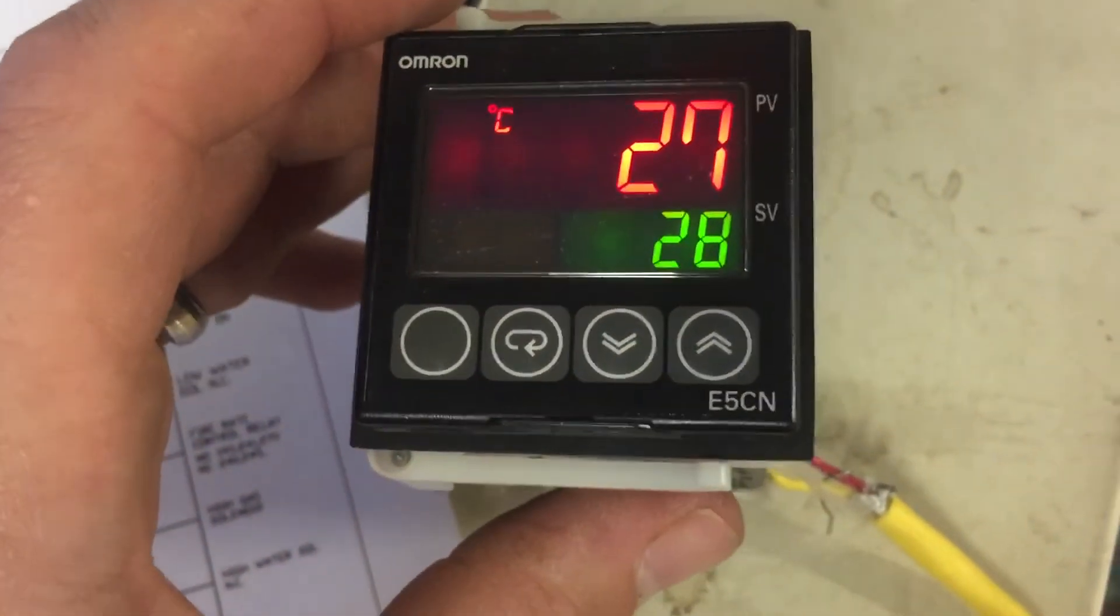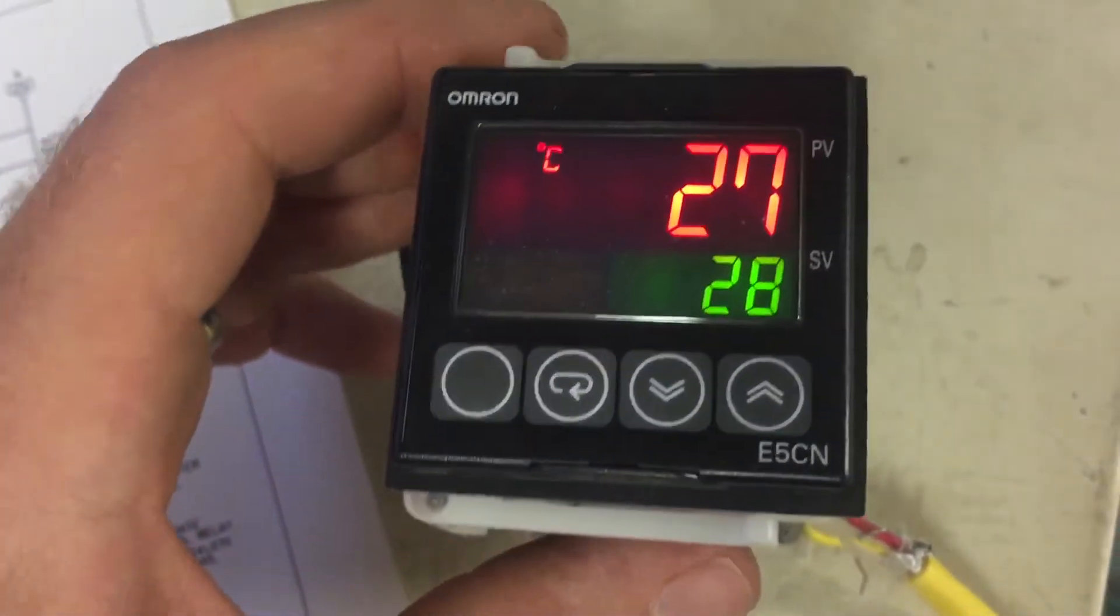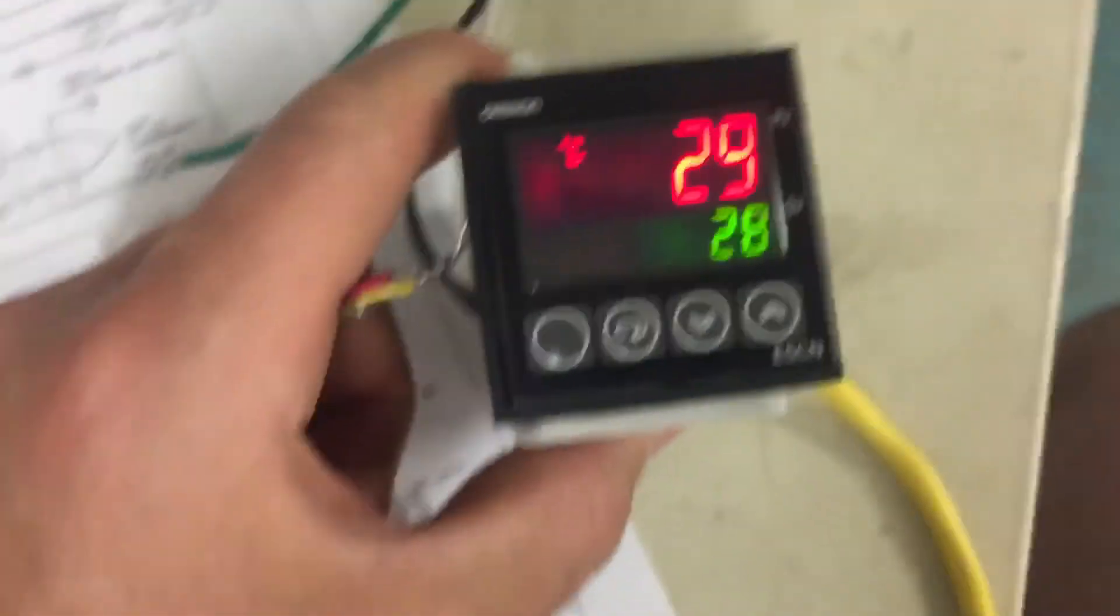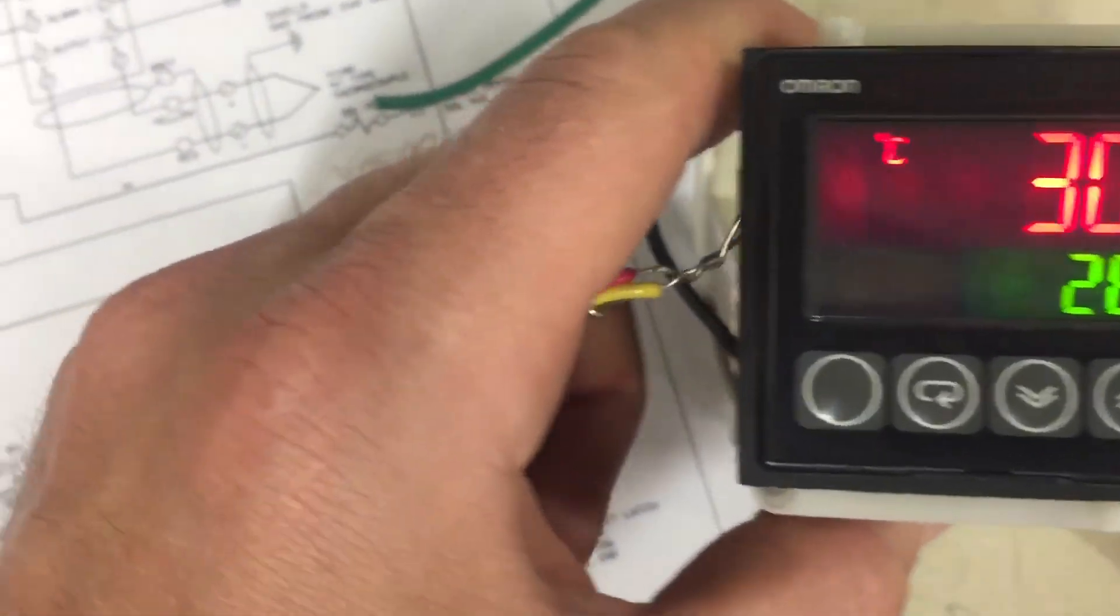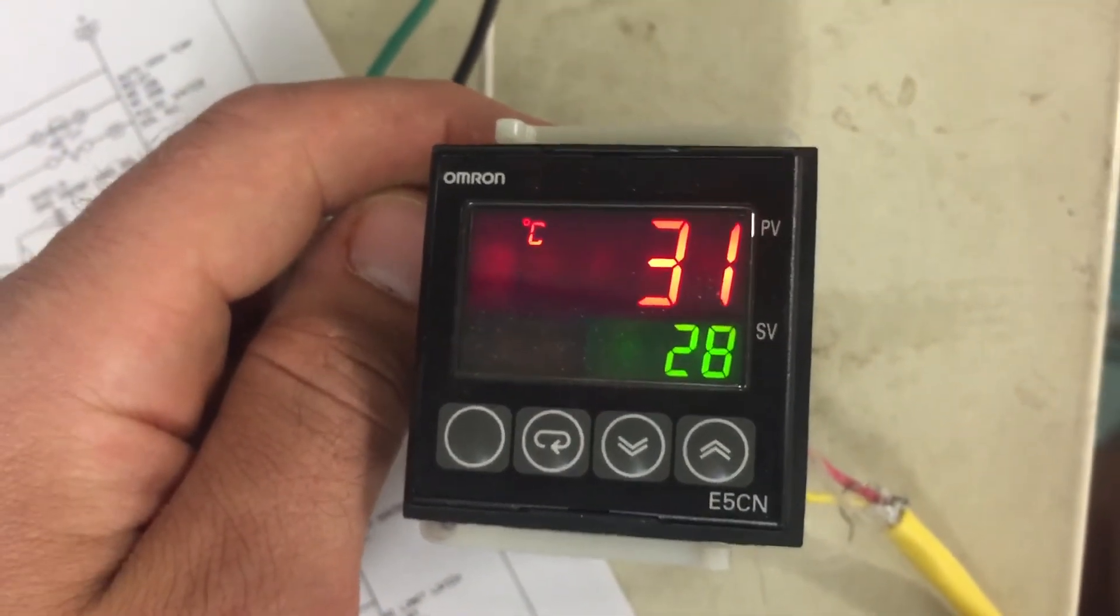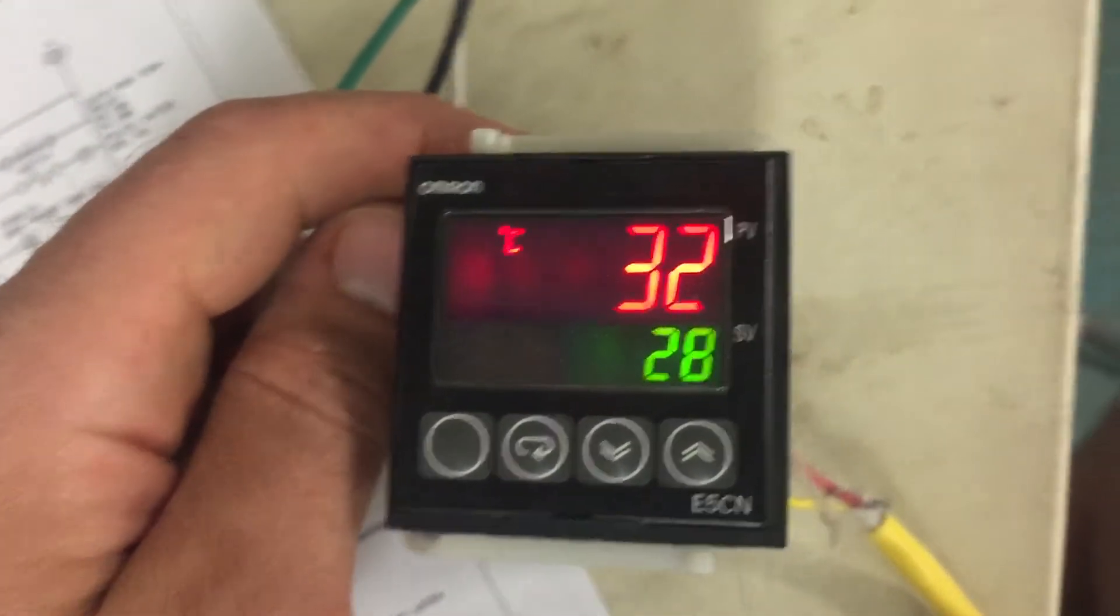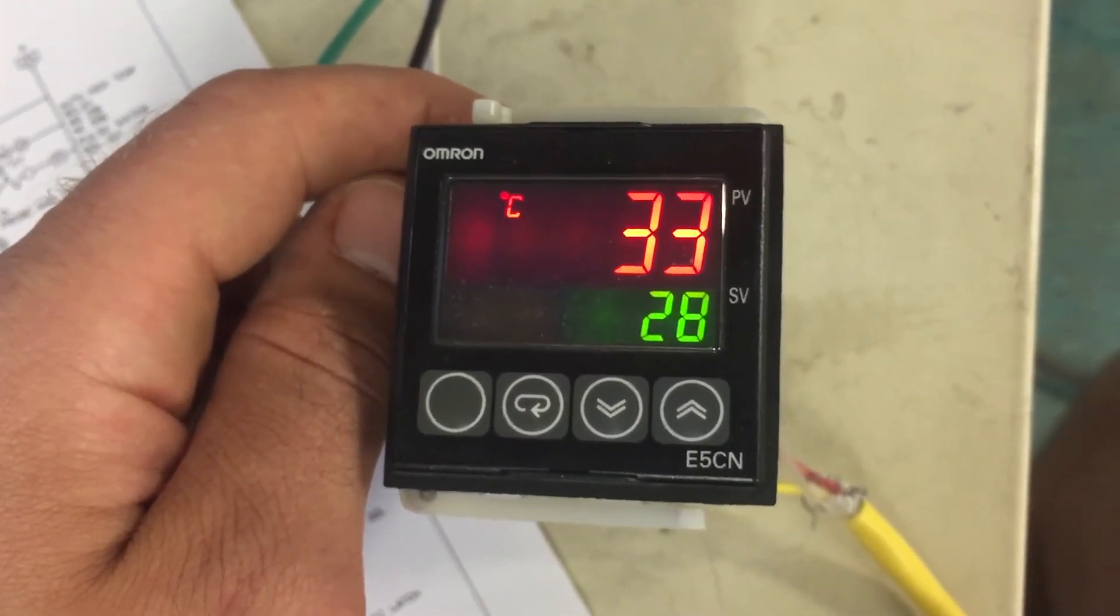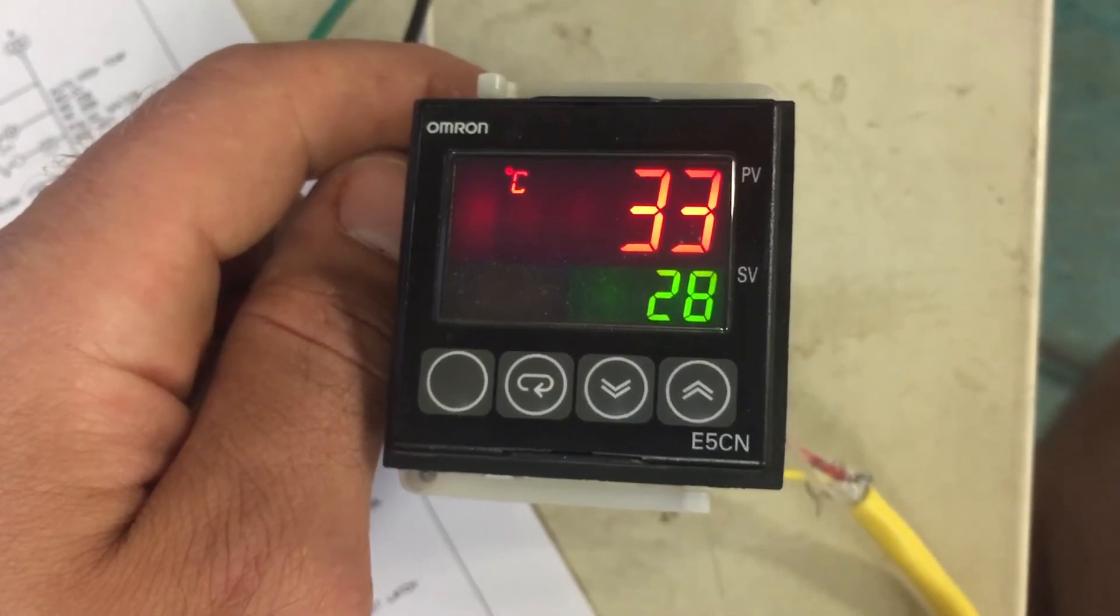So it's at 28 and my set point. And I'm just going to touch the leads here to increase it. Let's see. So you can see my wire there. So by touching it, it's increasing the temperature.